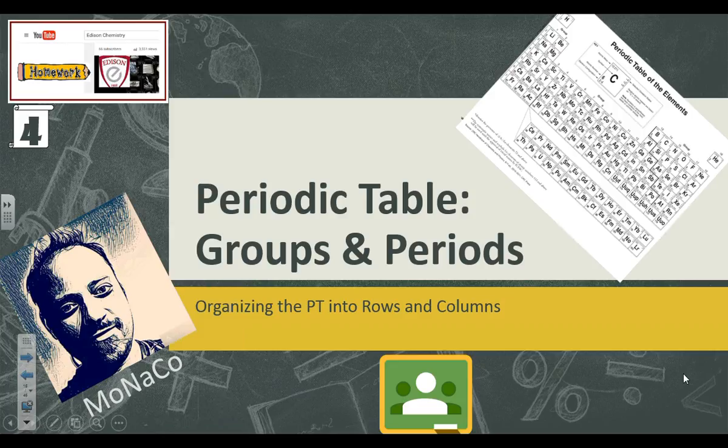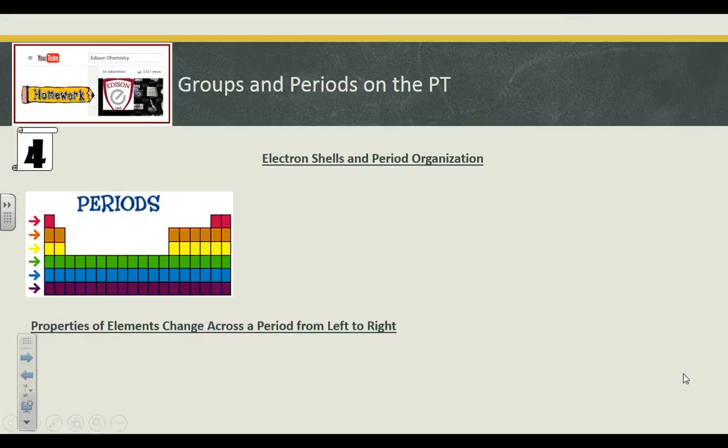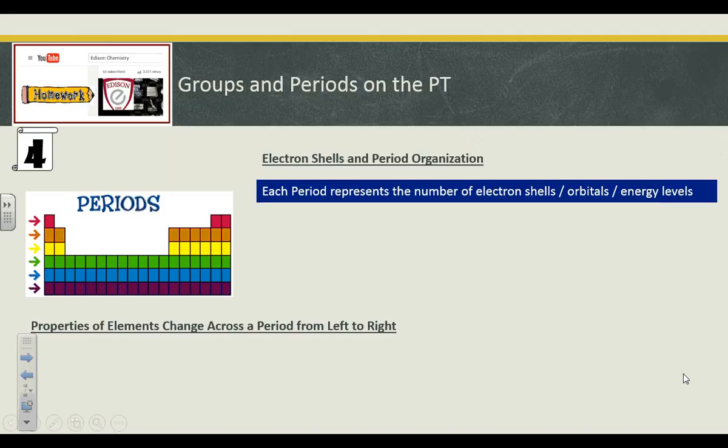We're going to cover the organizing of the PT into rows and columns. Periods, electron shells, and period organization. Each period represents the number of electron shells or orbitals or energy levels. Remember, all three of those are synonyms that you should be familiar with. I will refer to an orbital as any one of the above. So will the Regents exam, be prepared. Each period represents the number of electron shells that are present in a particular atom.